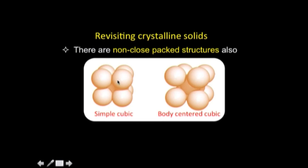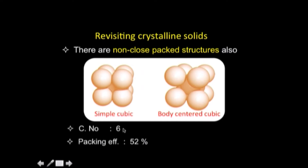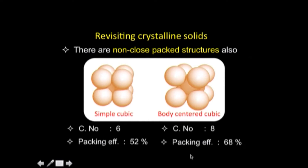In addition to close-packed structures, there are also non-close-packed structures. One is the simple cubic structure, which is less compact than HCP or CCP, and another is the body-centred cubic (BCC) structure. For simple cubic, the coordination number is six and packing efficiency is about 52%. For BCC, the coordination number is eight and packing efficiency is about 68%.